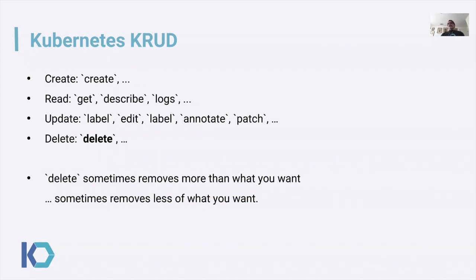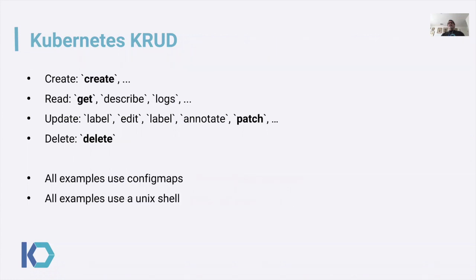Kubernetes has a lot of commands. Of course, I'm going to be focusing on delete. I'm going to be using four kubectl commands throughout this presentation: create, get, patch, and delete. To keep things simple, all of my examples are going to use config maps, and the entire presentation is basically going to be presented as a series of shell commands. The idea is to give you the commands, show you how they work or what their repercussions are, and to give you some examples that you can take back and try for yourself.